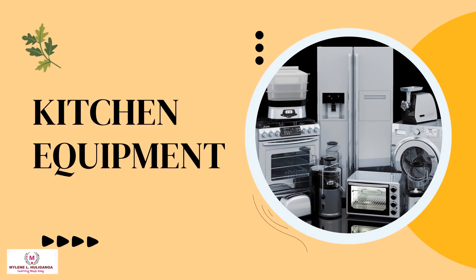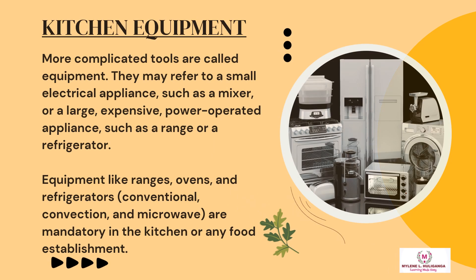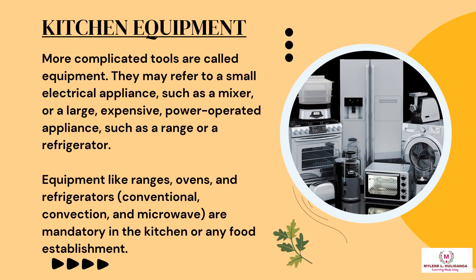The following are kitchen equipment. More complicated tools are called equipment. They may refer to a small electrical appliance such as a mixer, or a large expensive power-operated appliance such as a range or a refrigerator. Equipment like ranges, ovens, and refrigerators — conventional, convection, and microwave — are mandatory in the kitchen or any food establishment.